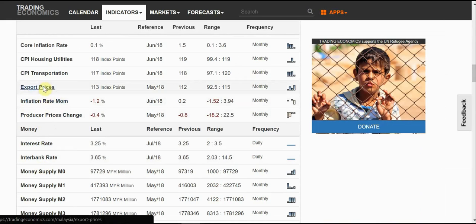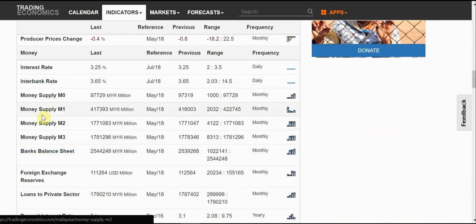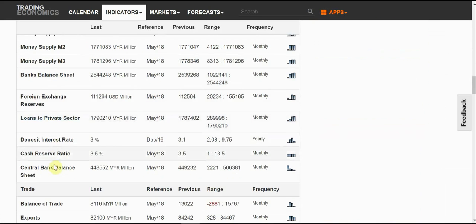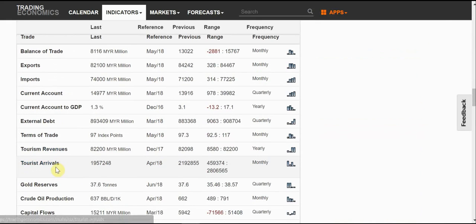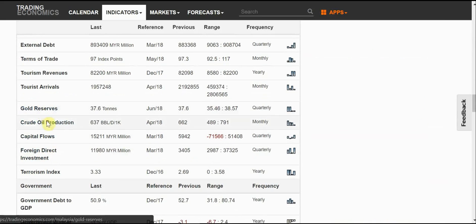Then we also have the CPI, which is the inflation rate. The CPI stands for consumer price index, which is the inflation rate. Then we have the money supply. There's a whole list of this economic data. You can look for all kinds of information about a country. We have the external debt, how much external debt we have, the gold reserve, the crude oil production, the foreign direct investment, the tourism.